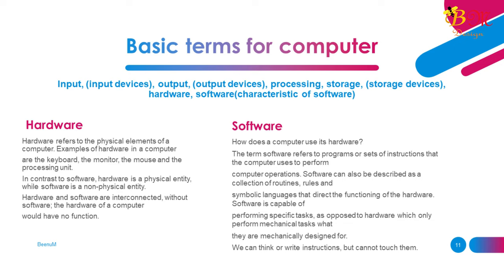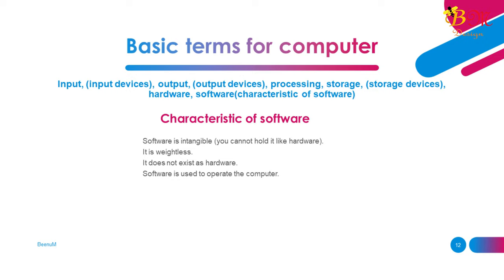Software: The term software refers to programs or sets of instructions that the computer uses to perform computer operations. Software can also be described as a collection of routines, rules, and symbolic languages that direct the functioning of the hardware. Software is capable of performing specific tasks, as opposed to hardware which only performs mechanical tasks it is designed for. We can think or write instructions but cannot touch them. Characteristics of software: it is intangible — you cannot hold it like hardware. It is weightless and does not exist as hardware. Software is used to operate the computer.